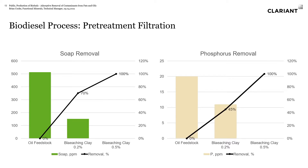Looking at some of the contaminants that need to be removed: the left side shows soap removal. This particular feedstock had about 500 parts per million of soap. Treated with 0.2% bleaching clay, that was taken down to about 150 ppm, but half a percent by weight bleaching clay achieved 100% removal. Phosphorus is another contaminant that can really interfere with the reaction. The oil feedstock started at about 20 ppm; using 0.2% took it down to about 12 ppm, but half a percent by weight took it below detection. It's important to get phosphorus below two parts per million for the reaction process.